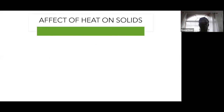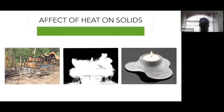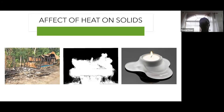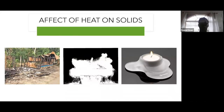Now let's look at some graphics. The first picture shows one of the four effects of heat on solids. Can anyone identify it from the chat? Very good — decomposition. One form of decomposition is when something turns to ashes. The second graphic shows some sort of smoke or vapor — that's sublimation, an example of dry ice turning from a solid directly to a gas.